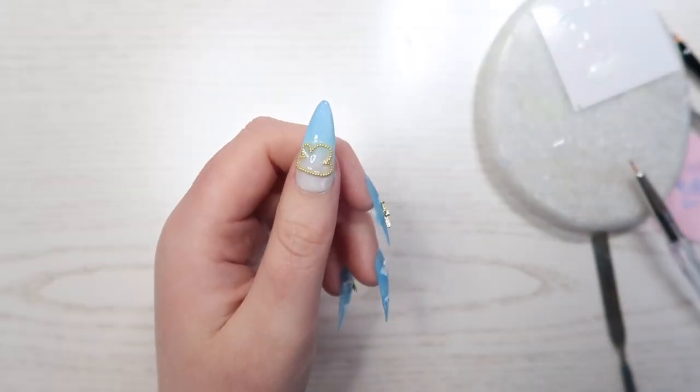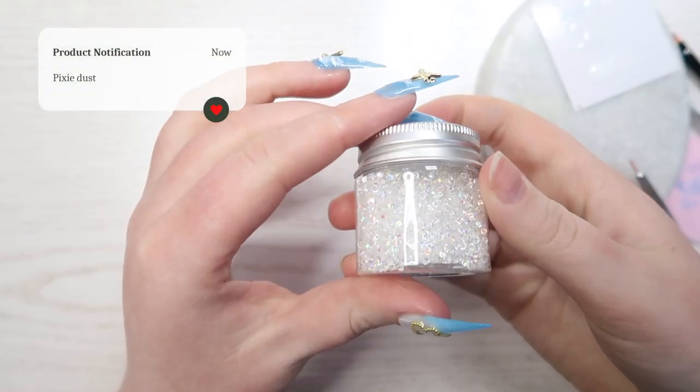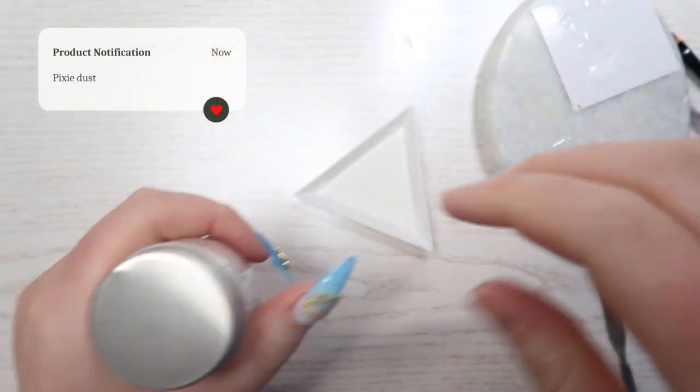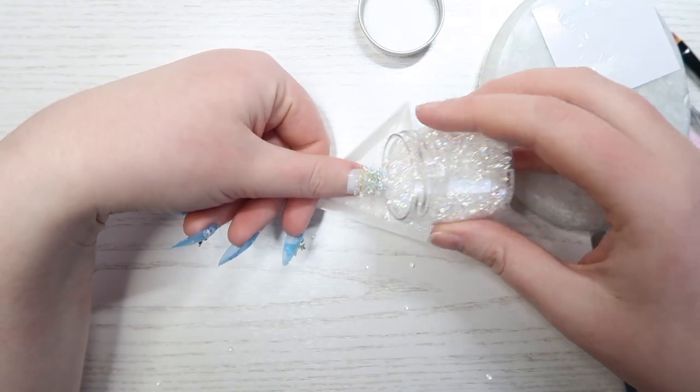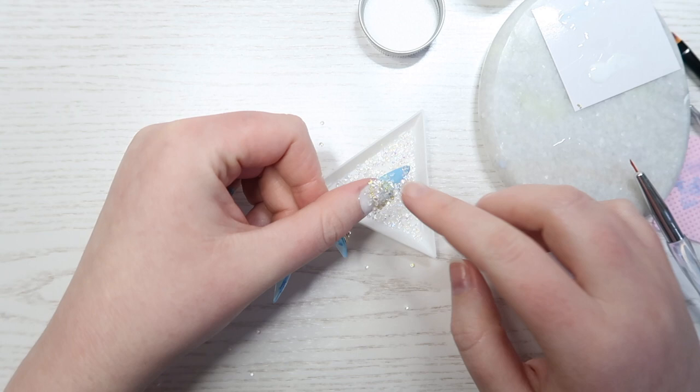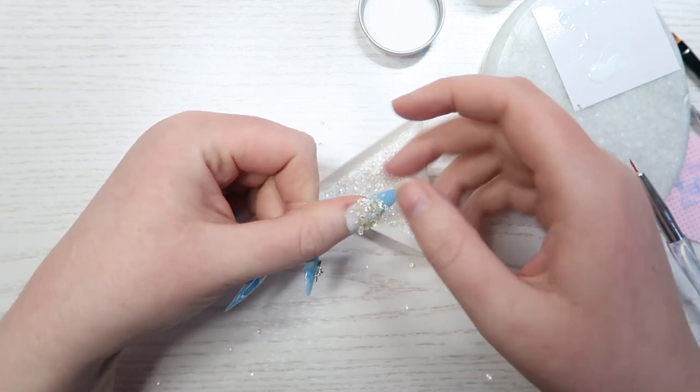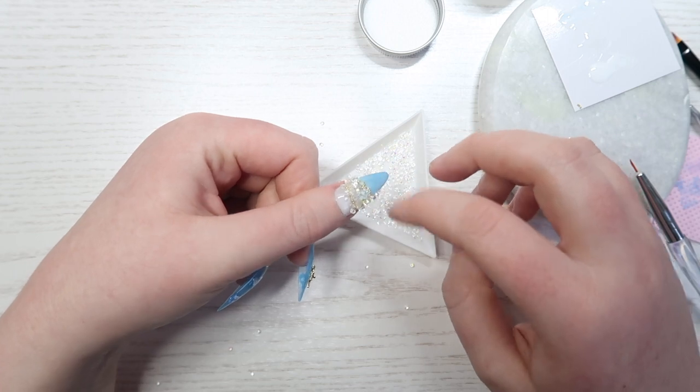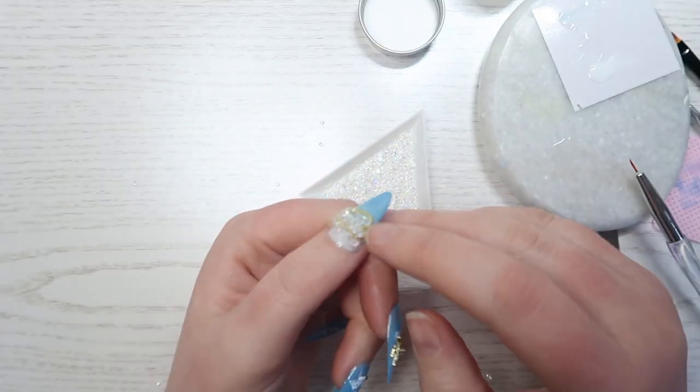But before curing the topcoat, I am going to sprinkle over some pixie dust gems. I am just using my finger to move the pixie dust into the cloud shape and adjust how they are lying in there.